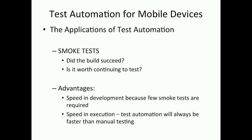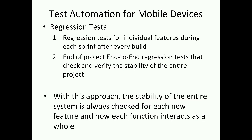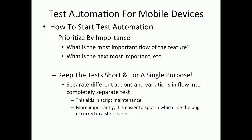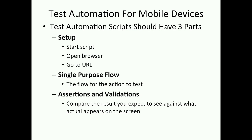Applications of test automation: smoke tests — right when something has been built, you test if the build succeeds and if it's worth continuing to test. And also regression tests — you can regression test after every individual build during each sprint and also at the end-to-end for the final regression test. How to start the process: start prioritized by importance — what's the most important thing and what's the most stable? Keep your tests short and for a single purpose. Many tests end up being hundreds of lines long — keep them very short, with three parts: set up, single purpose, and assertions and evaluations.